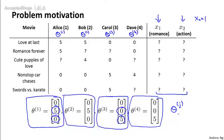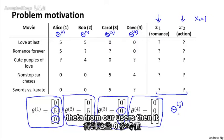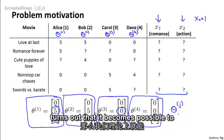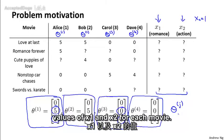So let's assume that somehow we can go to our users and each user j just tells us what is the value of theta j for them. And so it basically specifies to us how much they like different types of movies. If we can get these parameters theta from our users, then it turns out that it becomes possible to try to infer what are the values of x1 and x2 for each movie.